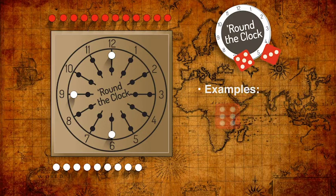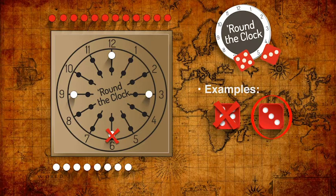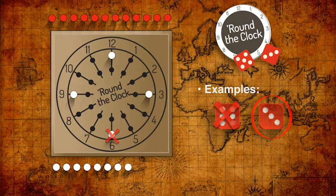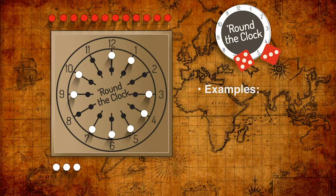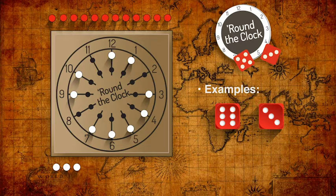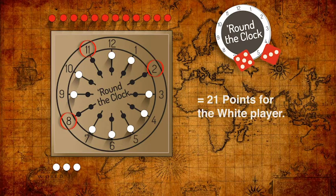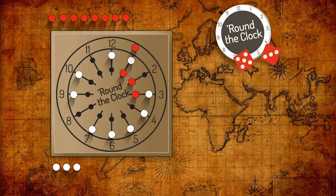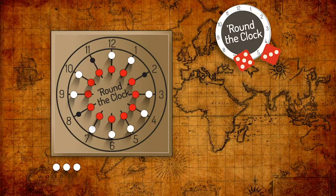If a player can only use the results of one of the dice to place a peg, the player does so, ignoring the other die, then continues the turn with another roll. The turn ends when the die results in any combination don't match any unpegged number. This will likely leave some numbers unpegged. If, however, the player succeeds in pegging all 12 numbers in their chosen ring, they win the round instantly.